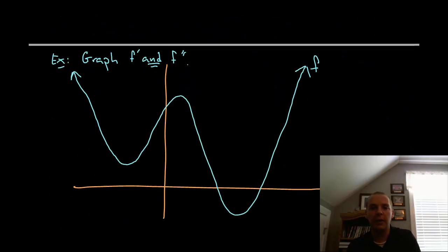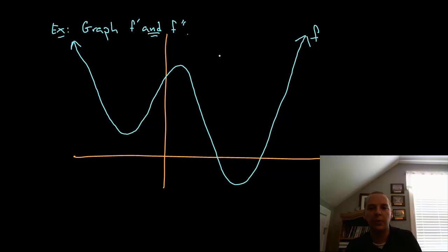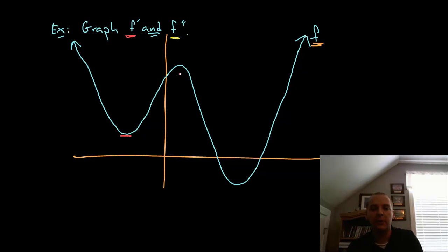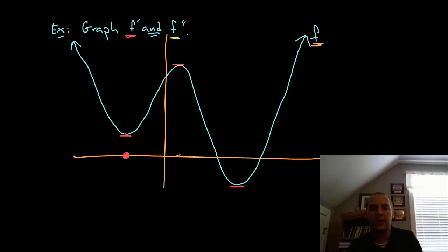Now we're going to finish up with a slightly harder example, going through this one a little bit quicker. Here's the graph of f in two colors — I'm going to do one in red and one in yellow. I'm going to try to draw the graphs of f prime and f double prime; let's do f prime first. I need to start off looking for the maxes and mins. All three of these places — the derivative will be zero. So I'm going to go ahead and put those on the x-axis. Those are the pivot points, or stationary points — the roots of the derivative. F prime is zero here, here, and here.